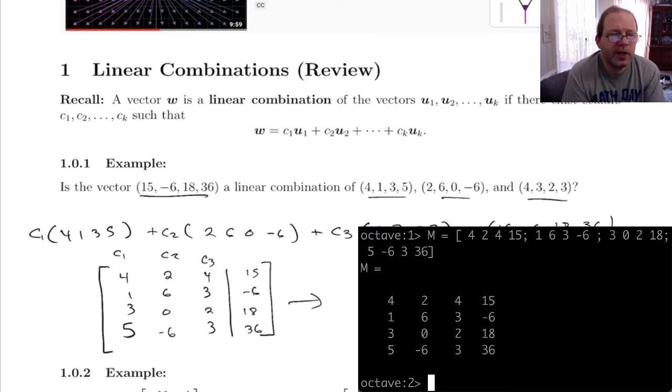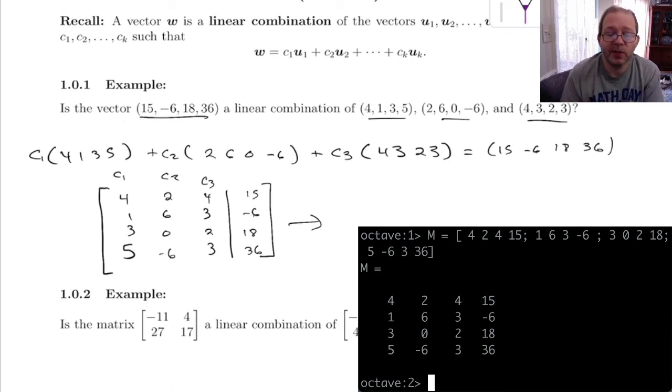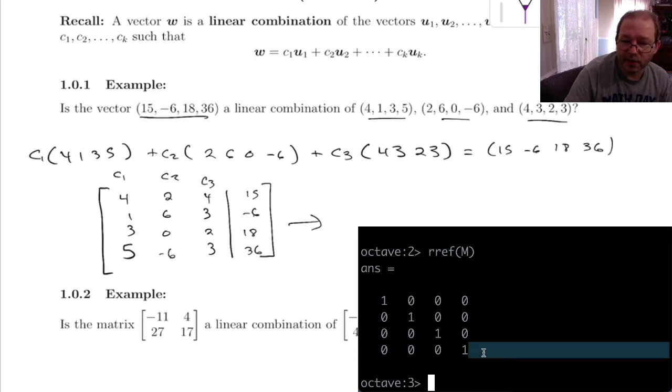It's asking, is this a linear combination? So to answer this question, really all we're asking is, does this system have a solution? So if we row-reduce it, we get this. And this last line here tells us that there's no solution.